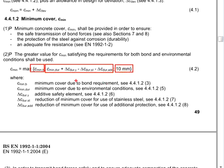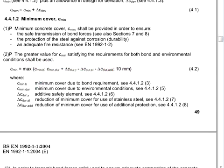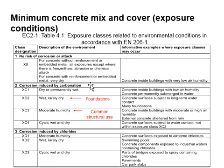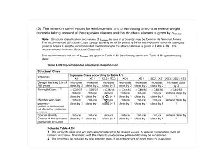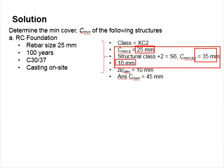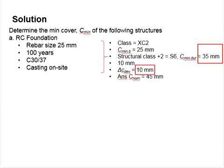So from here, you will know that your C minimum will be determined by the largest of the three components, which is 35. Your deviations depend on whether it is cast on site. When it is cast on site, your C deviations will be equal to 10 mm. Therefore, your C nominal will be equal to 35 plus 10, giving 45 mm for the RC foundation.